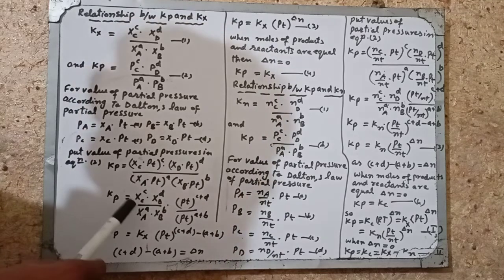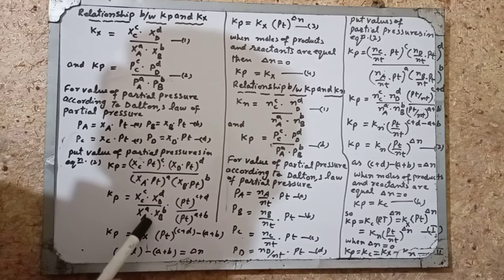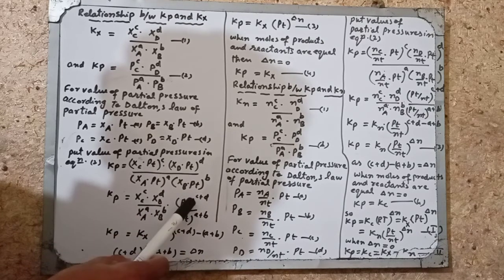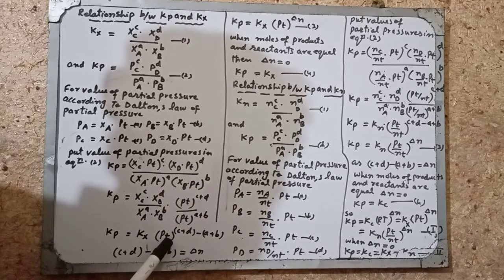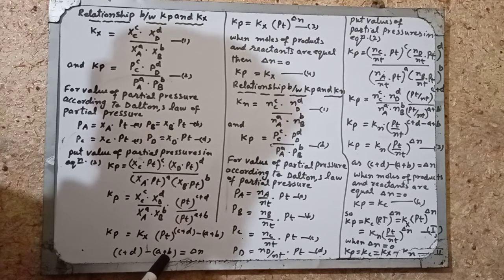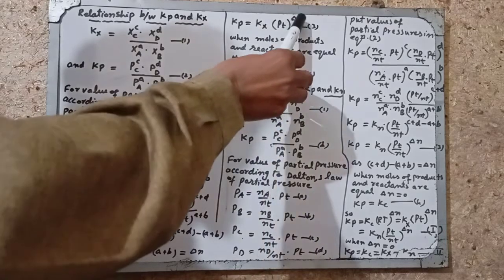After applying the powers, Kp = [XC^c × XD^d] / [XA^a × XB^b], which equals Kx. Then PT is common in numerator and denominator: in numerator PT has power c+d, and in denominator PT has power a+b. Bringing denominator PT up makes it negative, so: Kp = Kx × PT^(c+d−a−b). Since c+d are moles of products and a+b are moles of reactants, their difference is delta n (Δn). Therefore Kp = Kx × PT^(Δn).